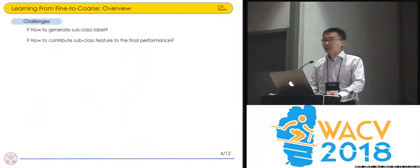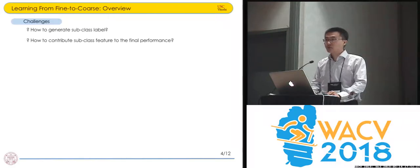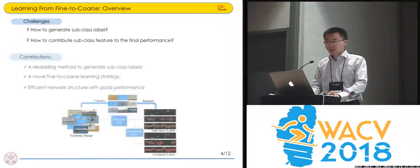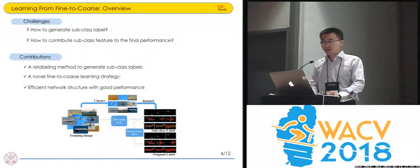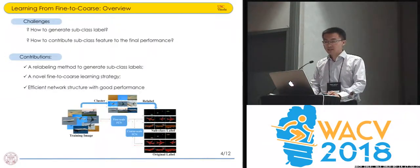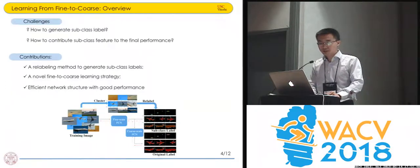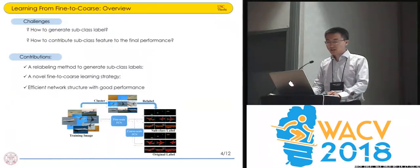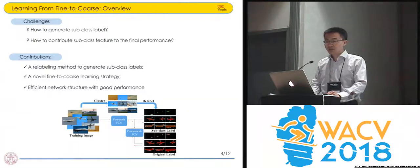The challenges here are how to generate the subclass labels and how to contribute the subclass features to the final performance. We propose a labeling method to generate the subclass labels and a novel fine-to-coarse learning strategy. Finally, we have our efficient network structure with good performance.